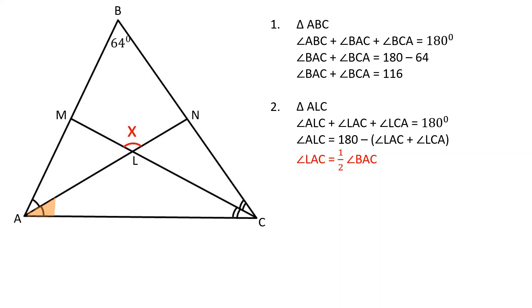Angle LAC is equal to half of angle BAC because AN is the bisector of angle BAC. Angle LCA is equal to half of angle BCA because CM is the bisector of angle BCA.